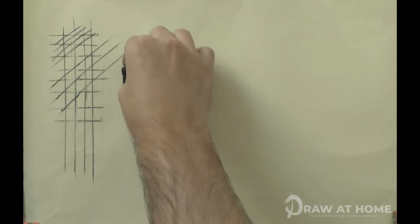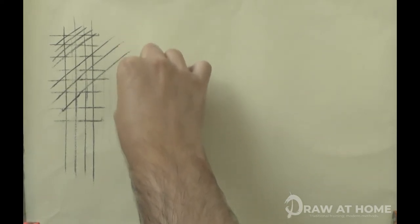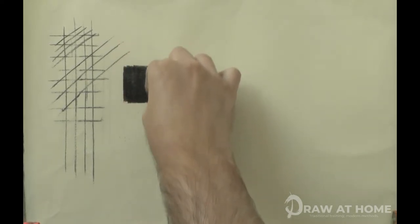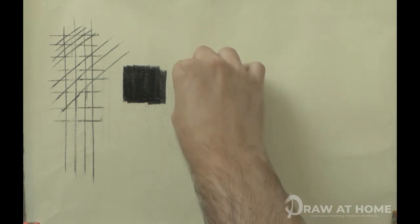You'll notice with willow charcoal, the tone you put down first is the darkest tone you can get with it. This is called a subtractive method, meaning you start with the darkest value and take off the medium to find the tone you want.